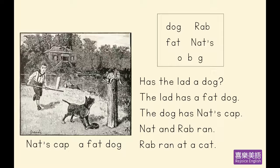所以我们知道它发生在过去的某个时间点，它是用过去简单式。在这边我们可以开始看到，当我们改变时态，我们总是改变动词，让变成ran。